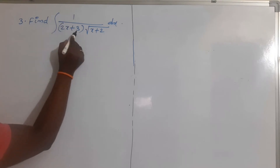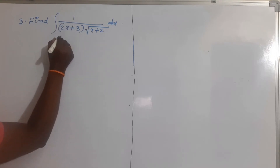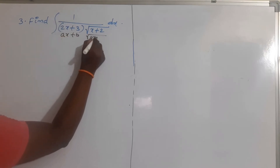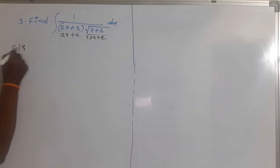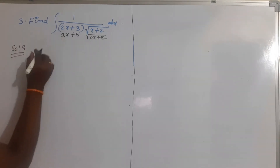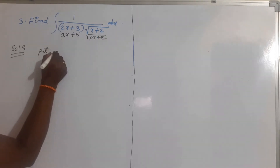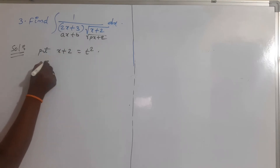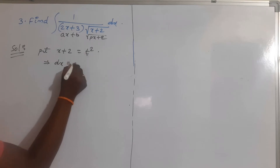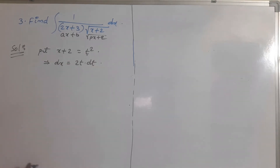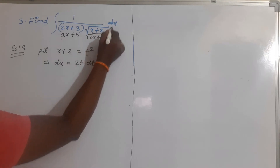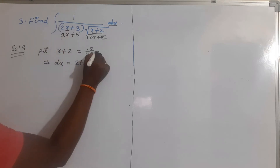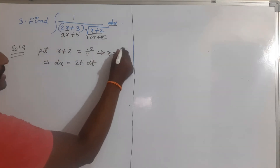See the next problem. Find the integration of 1 by (2x + 3) into root over (x + 2) dx. This is also in the form of 1 by (ax + b) into root over (px + q). Put x + 2 = t squared, so dx = 2t dt. We replace x + 2 by t squared, dx by 2t dt, and from x + 2 = t squared we get x = t squared minus 2.